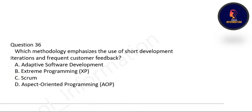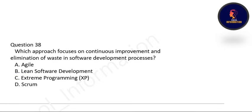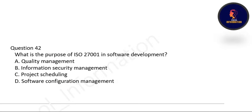Next: which methodology emphasizes short development iterations and frequent customer feedback? Correct option is C — Scrum. Next: what is the primary principle of Adaptive Software Development? The primary principle is embracing changes and uncertainty. Next: which approach focuses on continuous improvement and eliminating waste in the software development process? Correct option is B — Lean Software Development. Finally: what is the purpose of ISO 27001 in software development? ISO 27001 is for information security management — as compared to ISO 9001, which covers quality management. Thank you so much for watching.